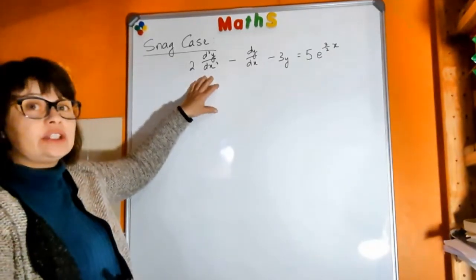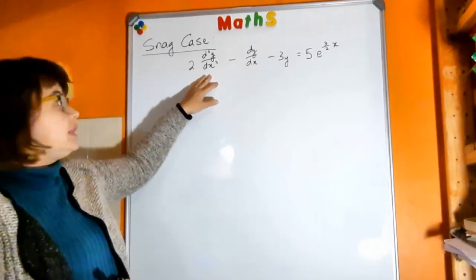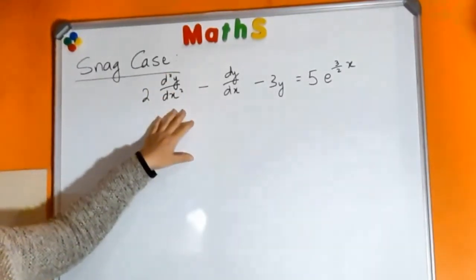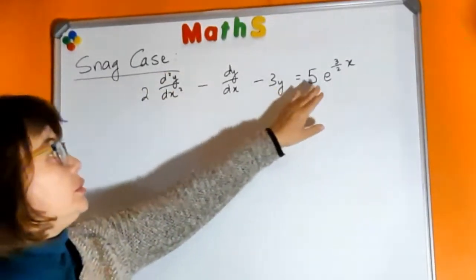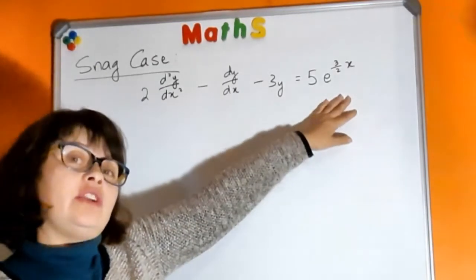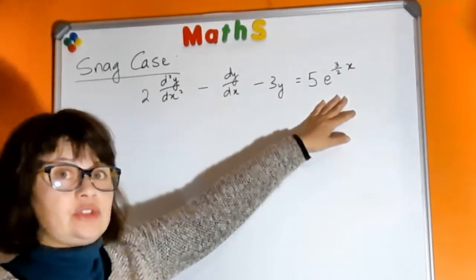So we have a second order differential equation. Our dependent variable is y and your independent is x. It's equal to some function which means it is a non-homogeneous or forced system differential equation.